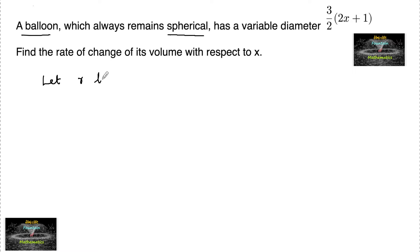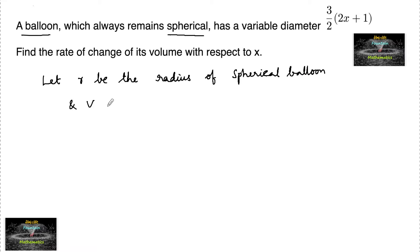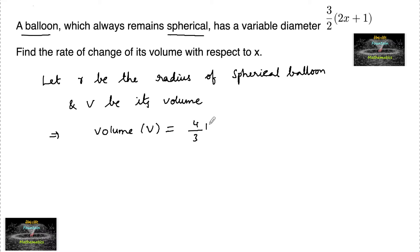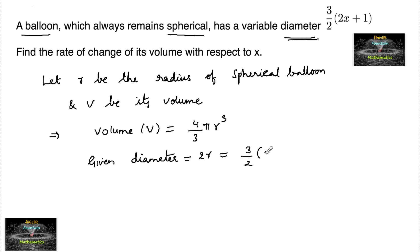Let r be the radius of the spherical balloon and let V be its volume. The volume of a sphere is V = (4/3)πr³. We are also given that the diameter, which equals 2r, is equal to (3/2)(2x + 1), which implies r = (3/4)(2x + 1).